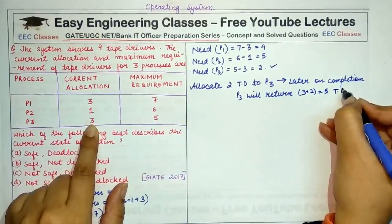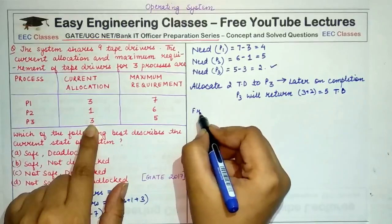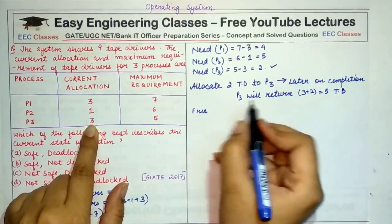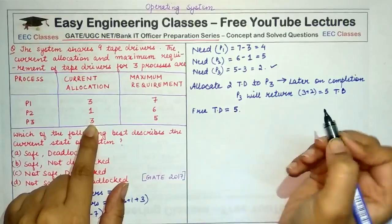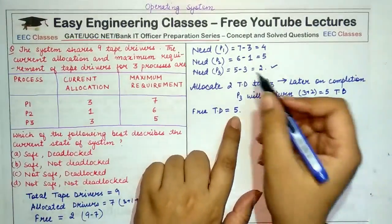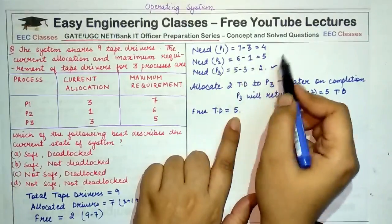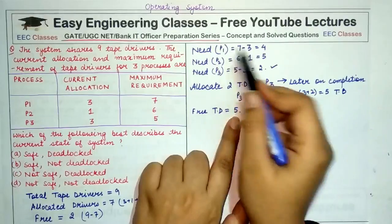Now, how many tape drivers are free with us? After completion of P3, free tape drivers that we have are 5 in number. So we can allocate 5 tape drivers to either P2 because P2 needs 5 more for completion or we can allocate it to P1.